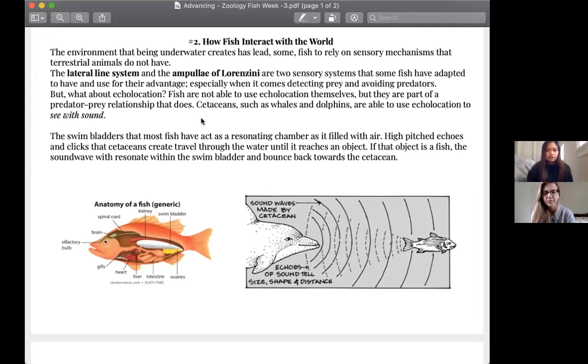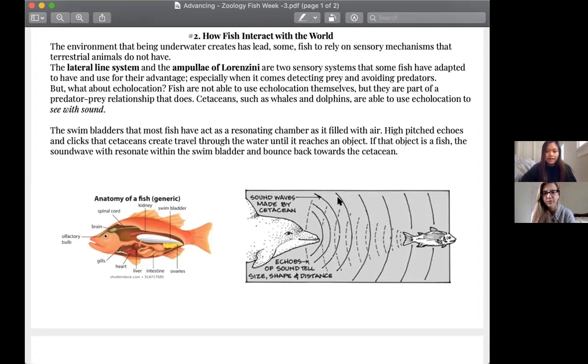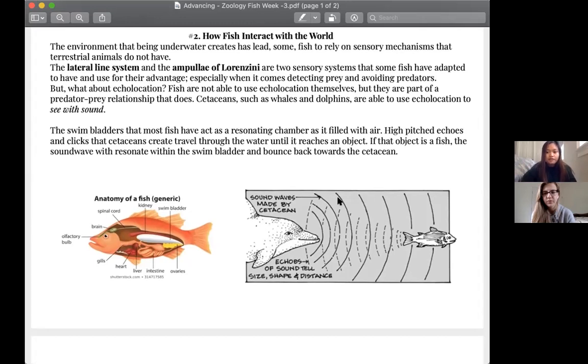Whales and dolphins use echolocation to see with sound. So we all know that fish have swim bladders. These swim bladders are filled with air as they help the fish regulate buoyancy in the water column. This air-filled bubble acts as a great resonating chamber for sound waves to bounce back from echolocation sources. So whales and dolphins will send out these high-pitched echoes through the water column and they will continue to travel through the water until it reaches an object.